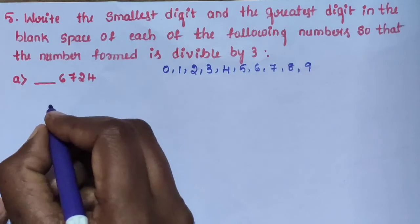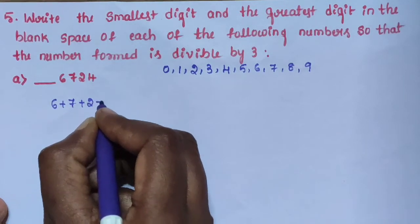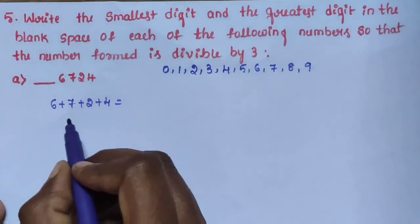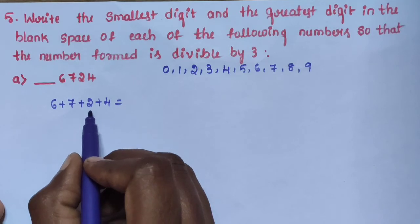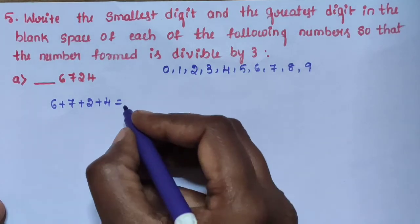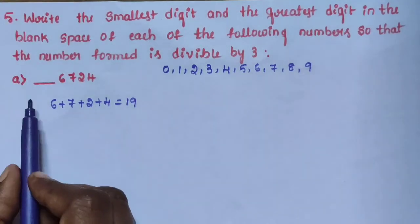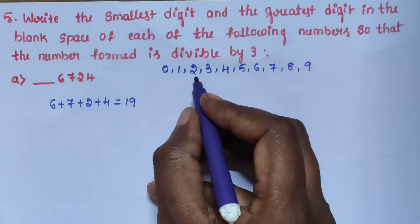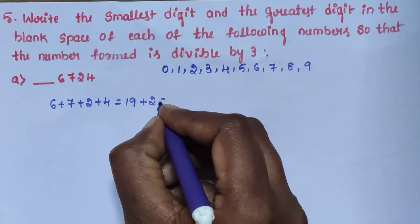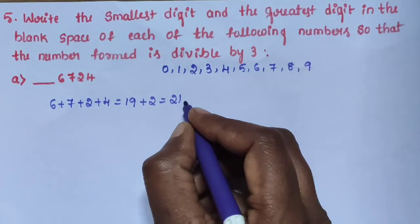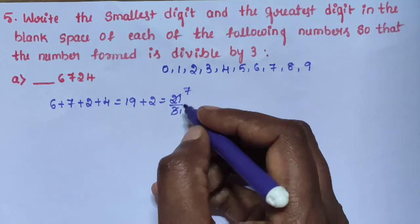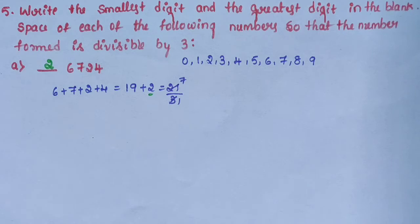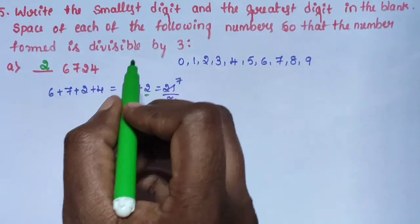Sub question A: 6, 7, 2, blank, 4. First, find the smallest digit. Sum of given digits: 6 plus 7 plus 2 plus 4 equals 19. We need the total to be divisible by 3. 19 plus 2 equals 21, and 21 is divisible by 3. Therefore, the smallest digit is 2.